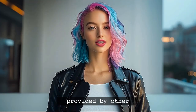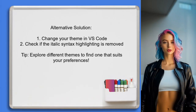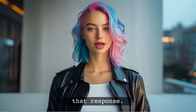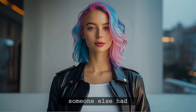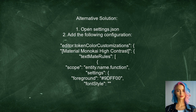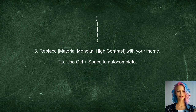Now let's look at the answers provided by other users. One user found a simple solution by changing their theme in Visual Studio Code — they discovered that the italic syntax highlighting was due to the theme they were using, and switching to a different theme resolved the issue. An alternative solution from another user suggests modifying your settings.json file to add specific configurations to disable italic syntax highlighting for certain keywords.